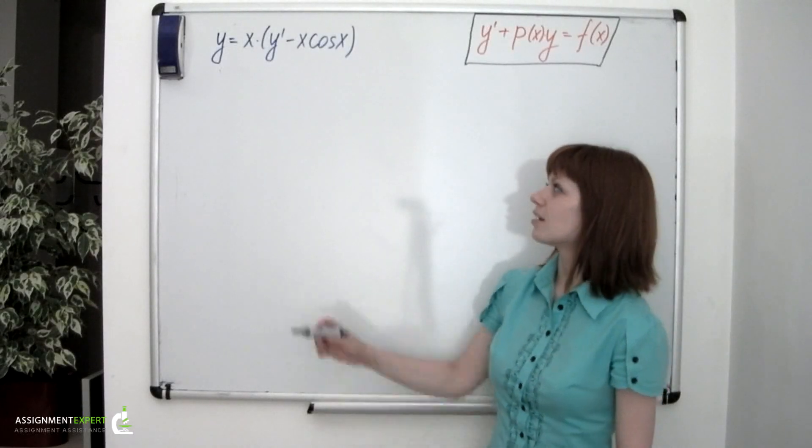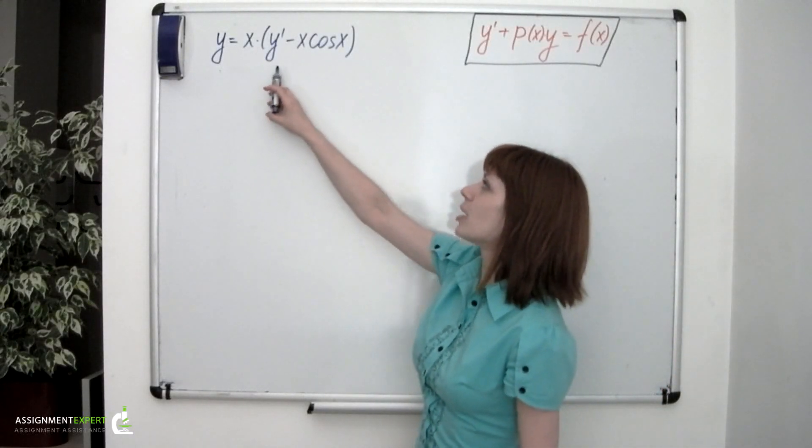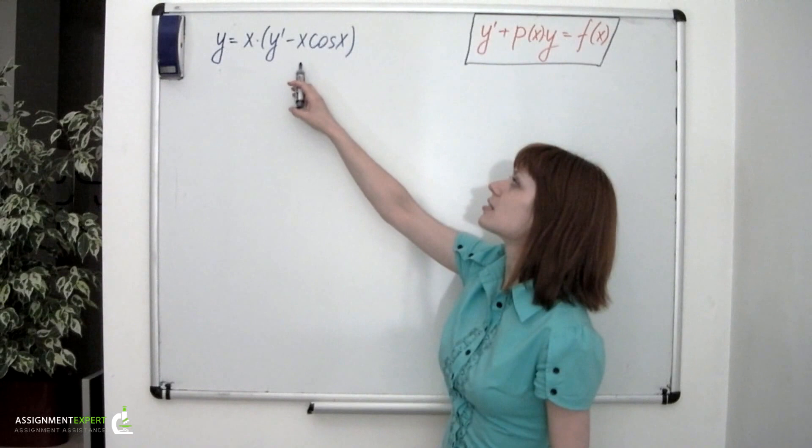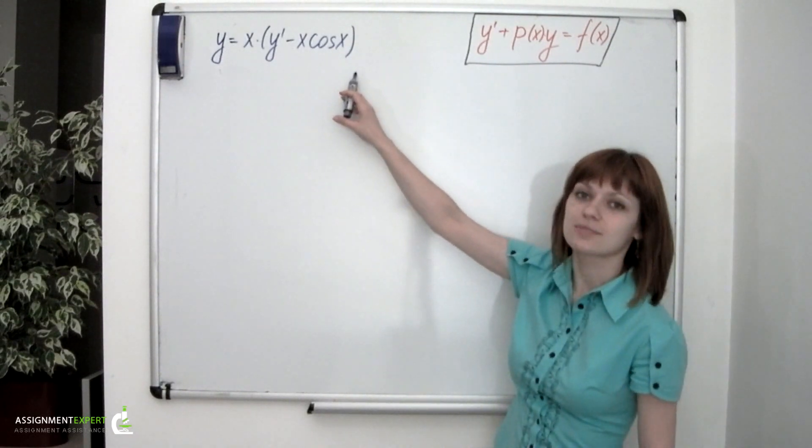Example 3. y equals x times y' minus x times cosine of x.